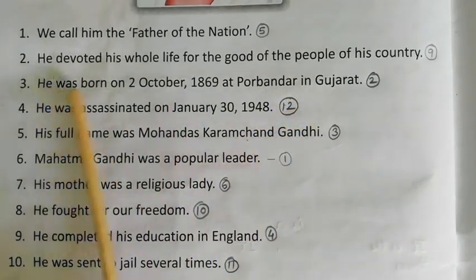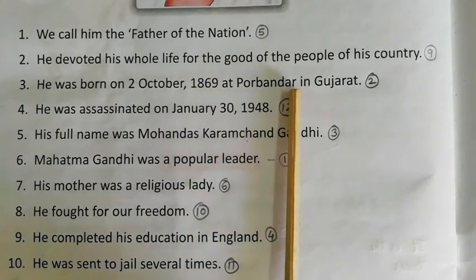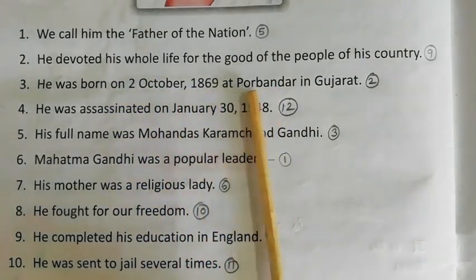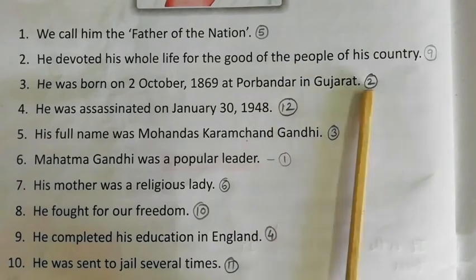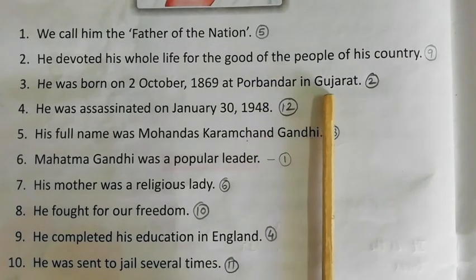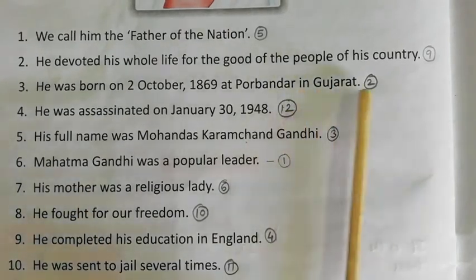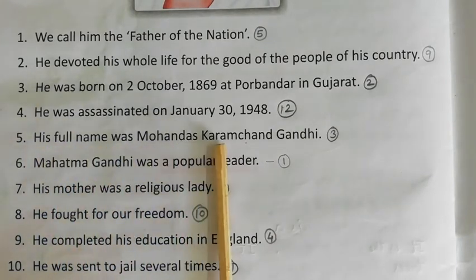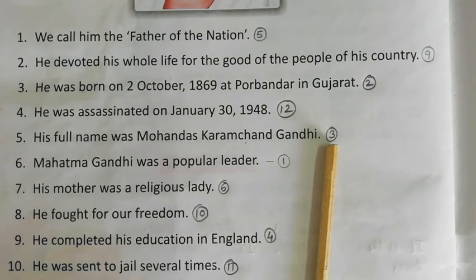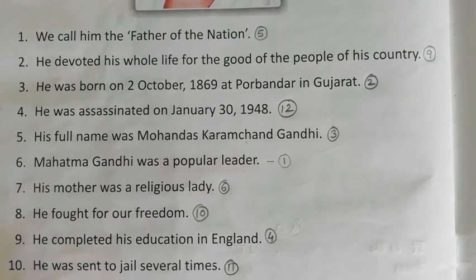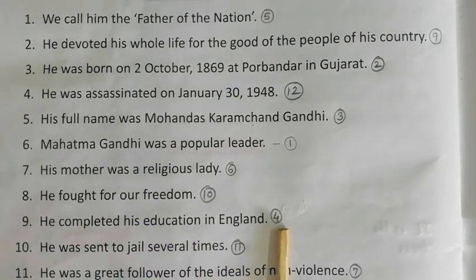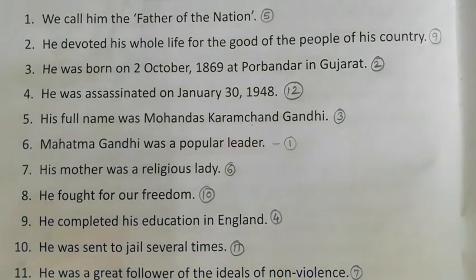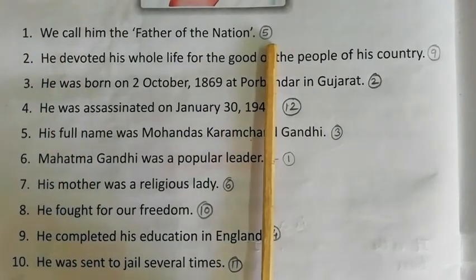The second sentence is: 'He was born on 2nd October 1869 at Porbandar in Gujarat.' The third sentence is: 'His full name was Mohandas Karamchand Gandhi.' The fourth sentence is: 'He completed his education in England.' The fifth sentence is: 'We call him the Father of the Nation.'